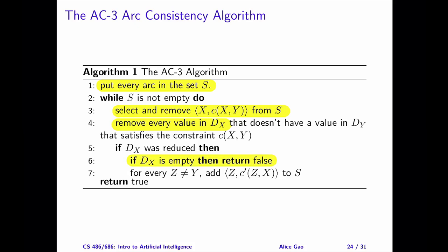If X's domain is not empty, we may need to add one or more arcs back to S. At this step, consider any arc where X is a secondary variable, and Y is not the primary variable. If any such arc is not in S, we will add the arc back to S.